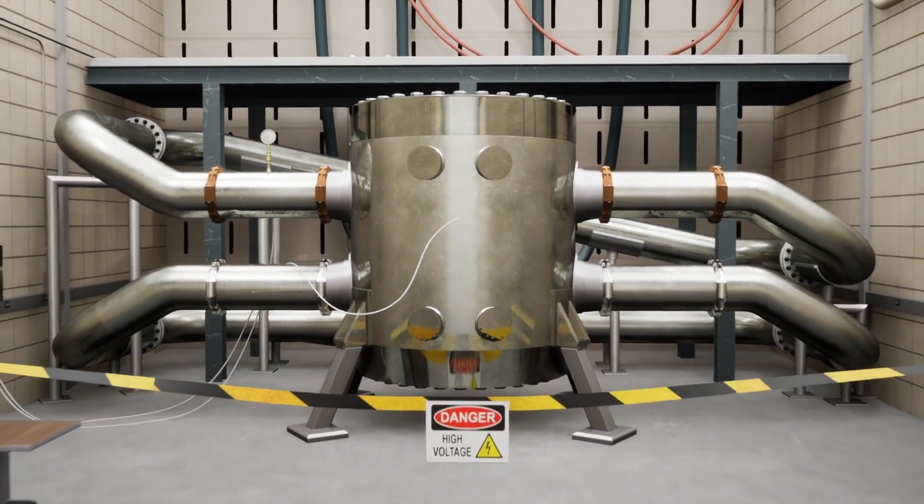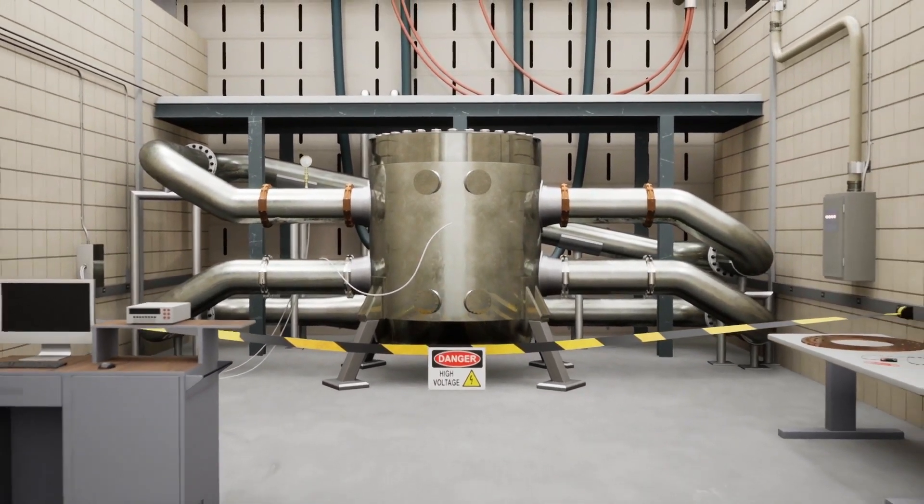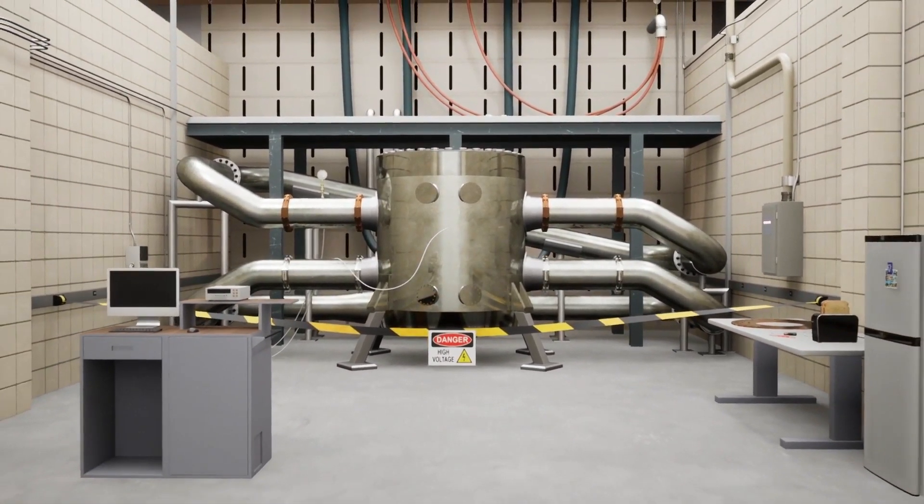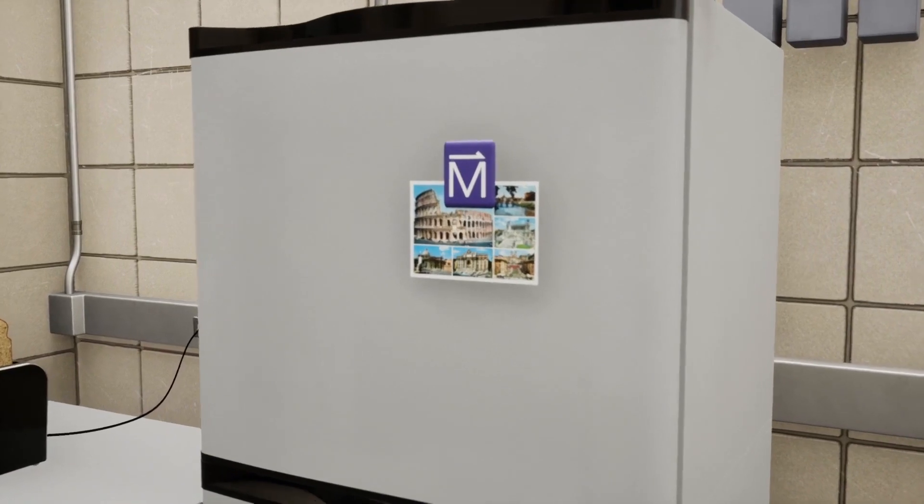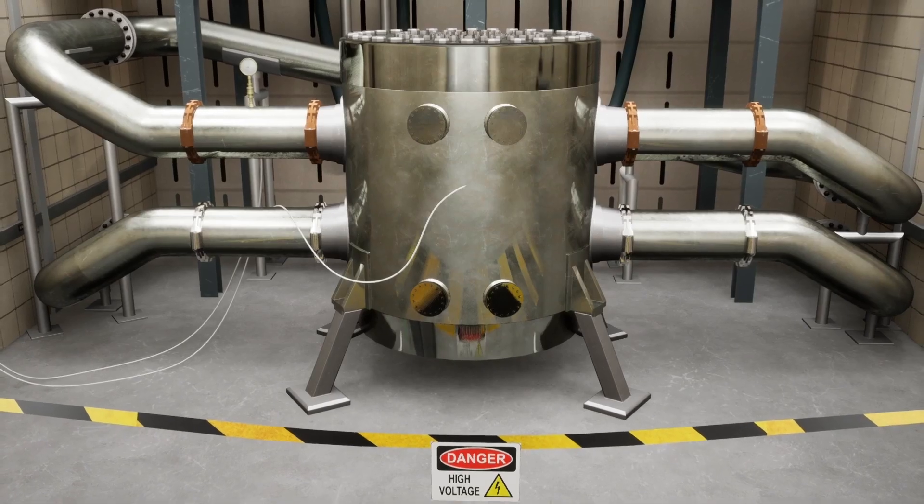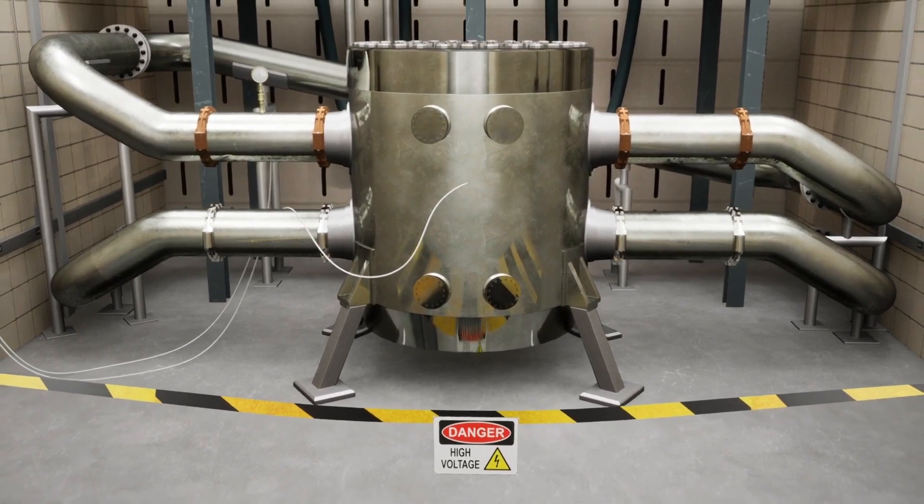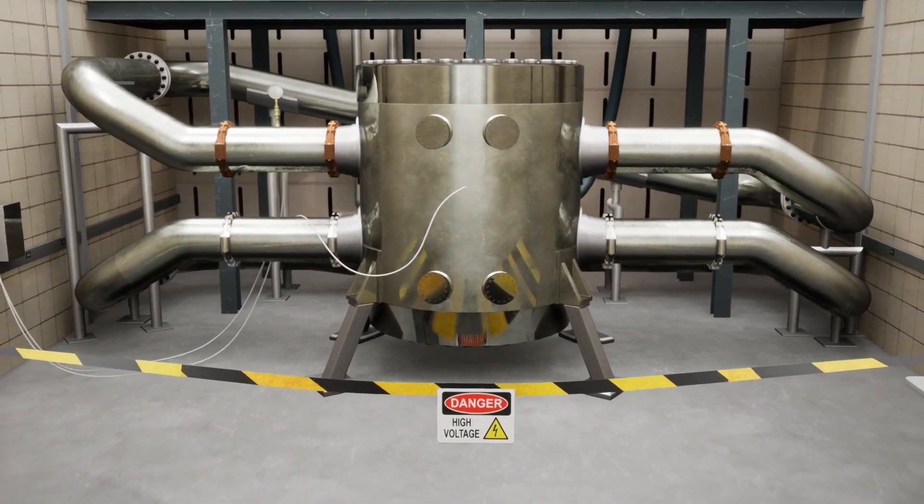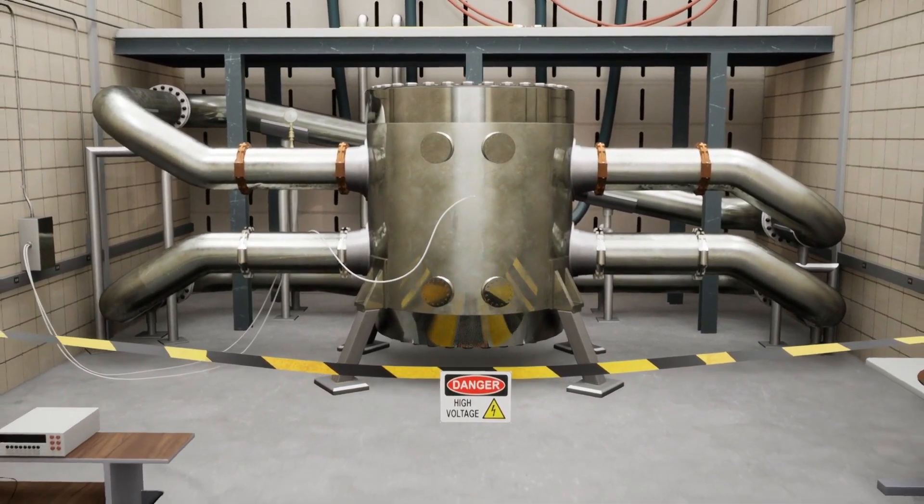Magnets come in all shapes and sizes. They can be made in different ways and used for different things. This sticks stuff to your fridge. This makes breakfast, and this helps scientists discover new things about materials and about physics itself by revealing subatomic phenomena.